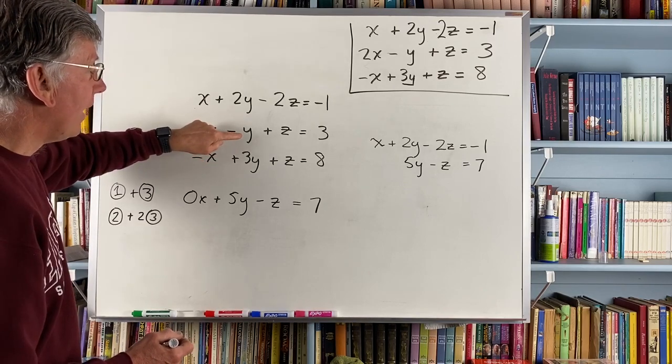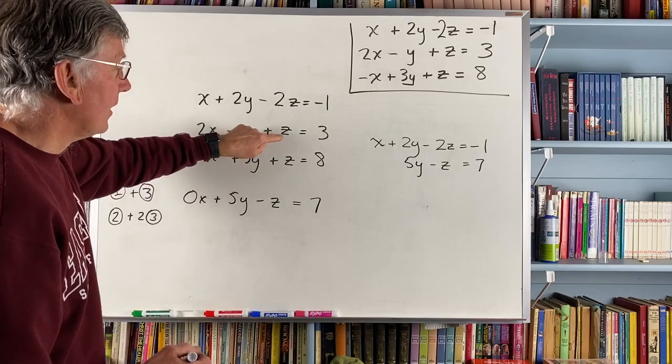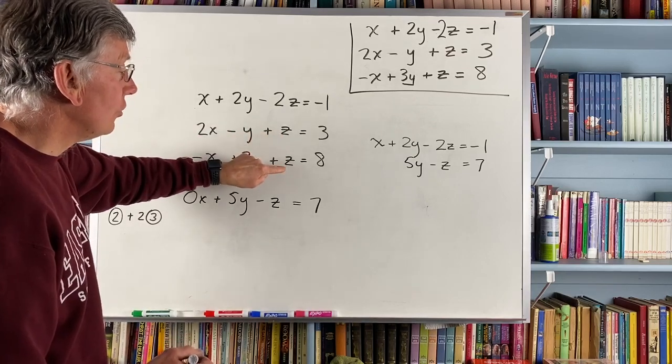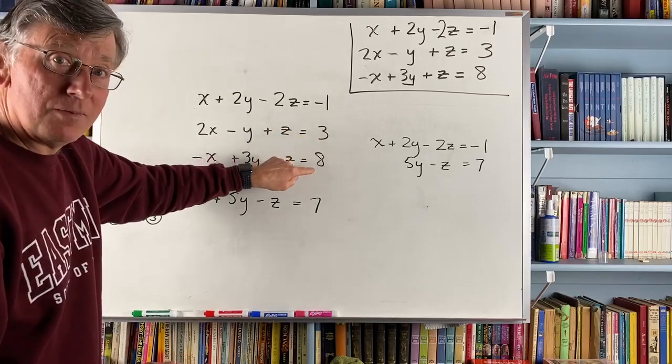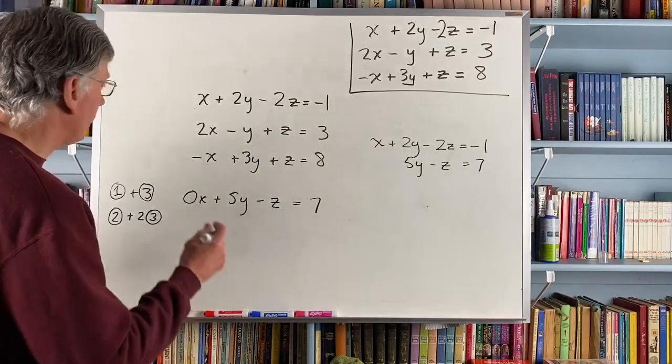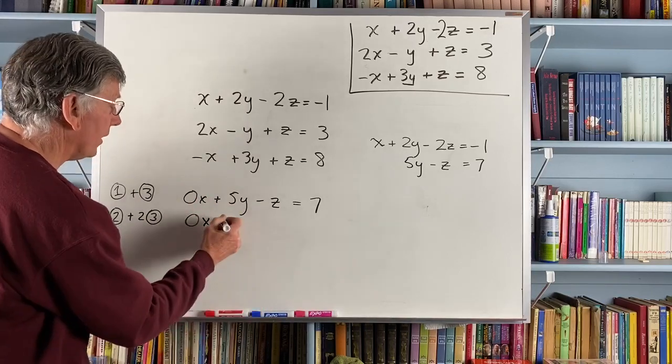I'm going to take minus y and add 6y. I'm going to take z and add 2z. I'm going to take 3 and add 2 times 8. So 2x plus negative 2x gives me a 0x, which is what I want.